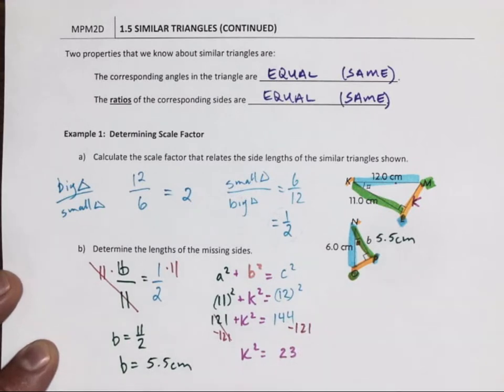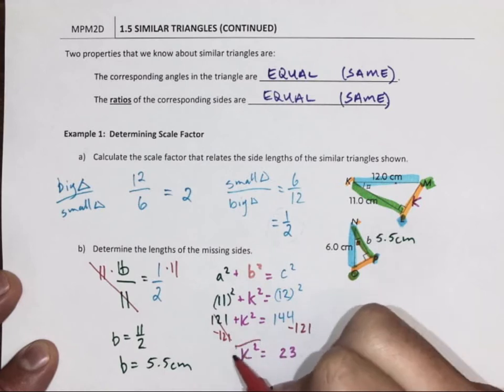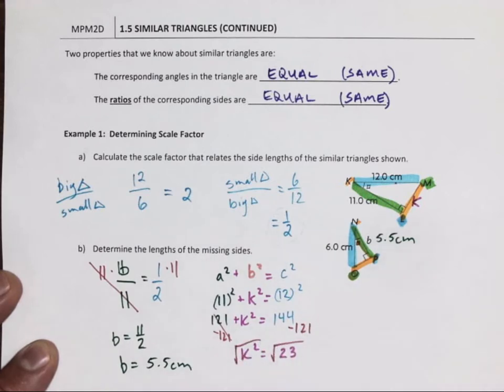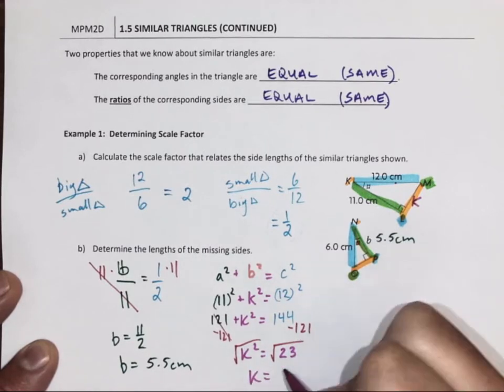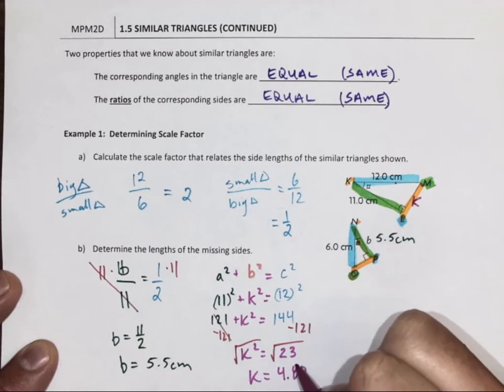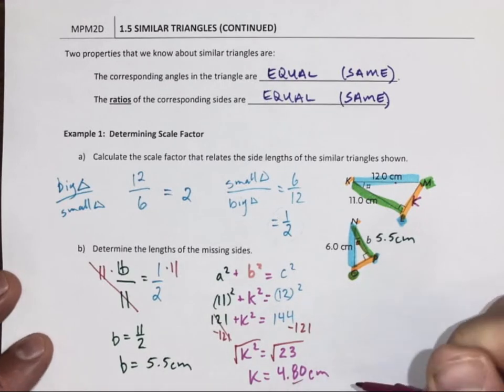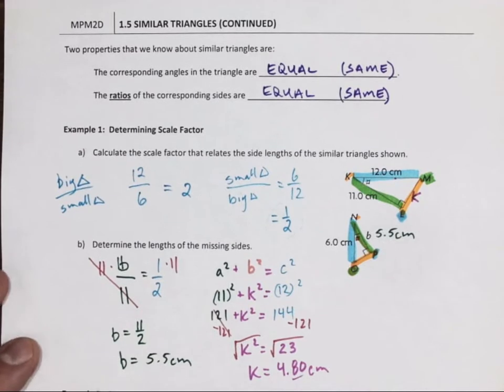Now we're going to get K by itself. K squared, so we're going to take the square root of K squared, which means we're going to take the square root of the right. And K is equal to 4.80. 4.7958...31523, which we round 2 decimal places: 4.80 centimeters.